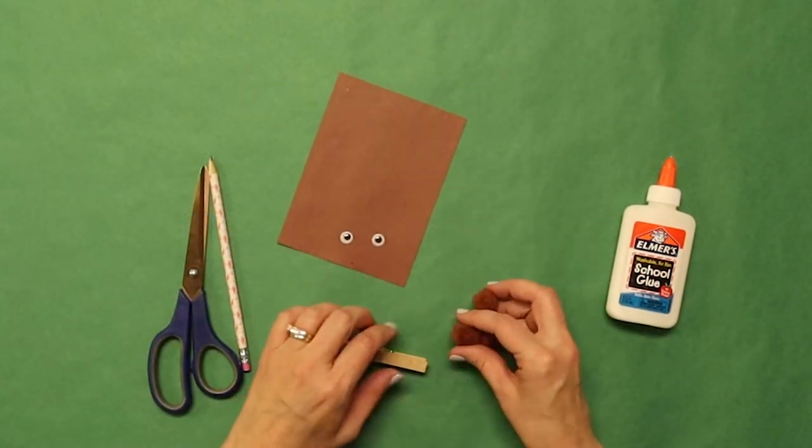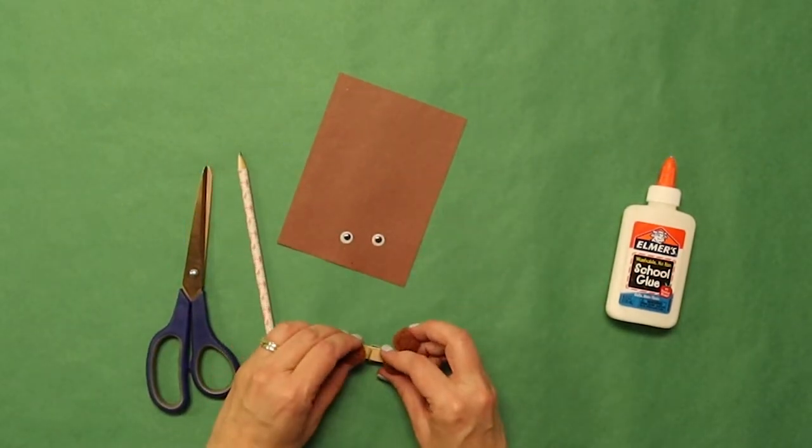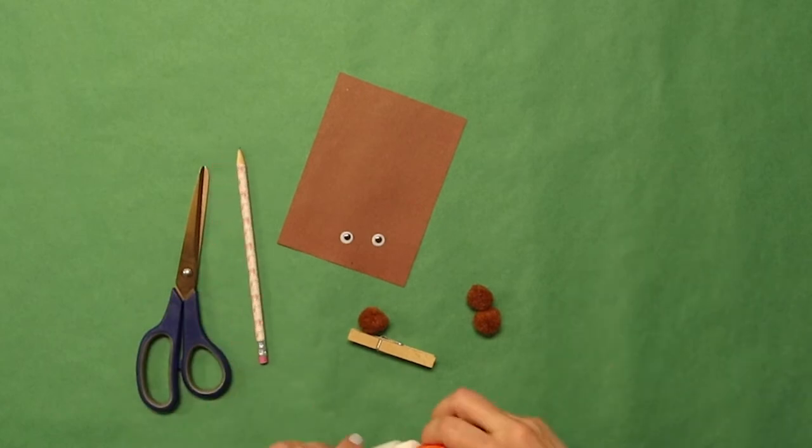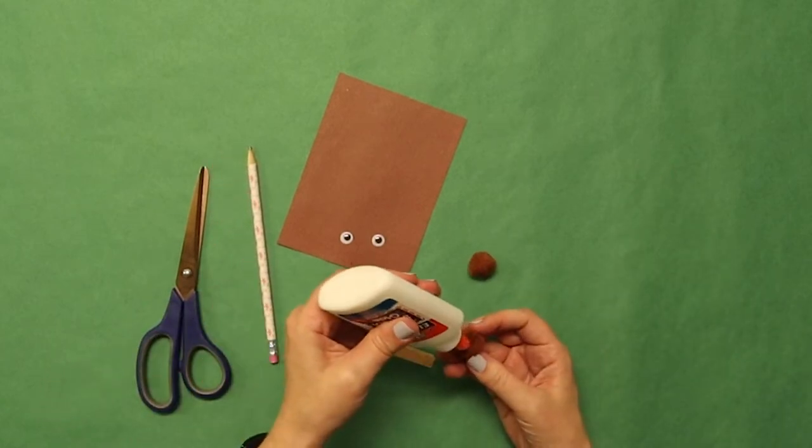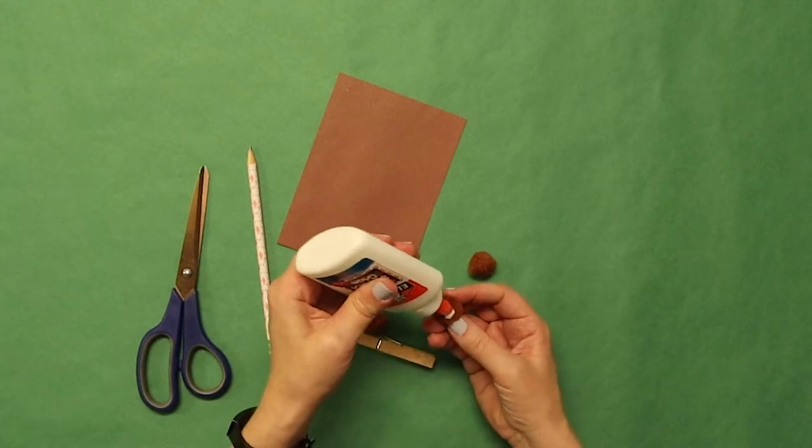First thing we're gonna do is put our pom-poms onto our clothespin. I find that good old-fashioned Elmer's glue works best, a little bit.